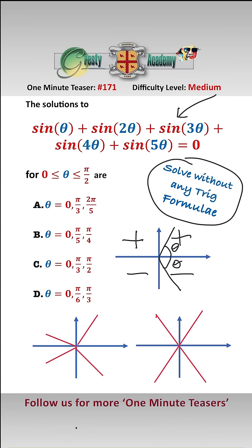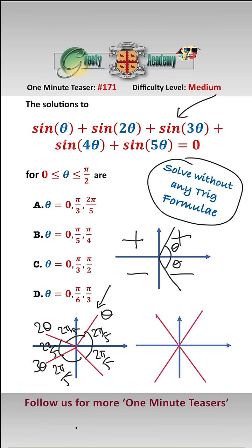What we can do is first split the circle into five equal parts, each of 2π/5. We label the corresponding angles theta, 2 theta, 3 theta, 4 theta, and 5 theta.